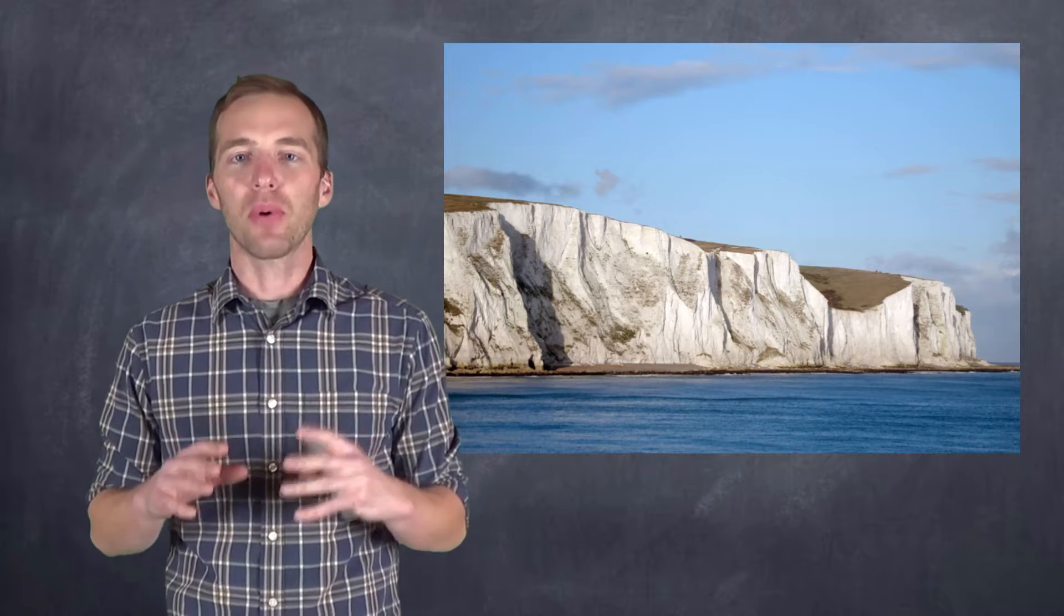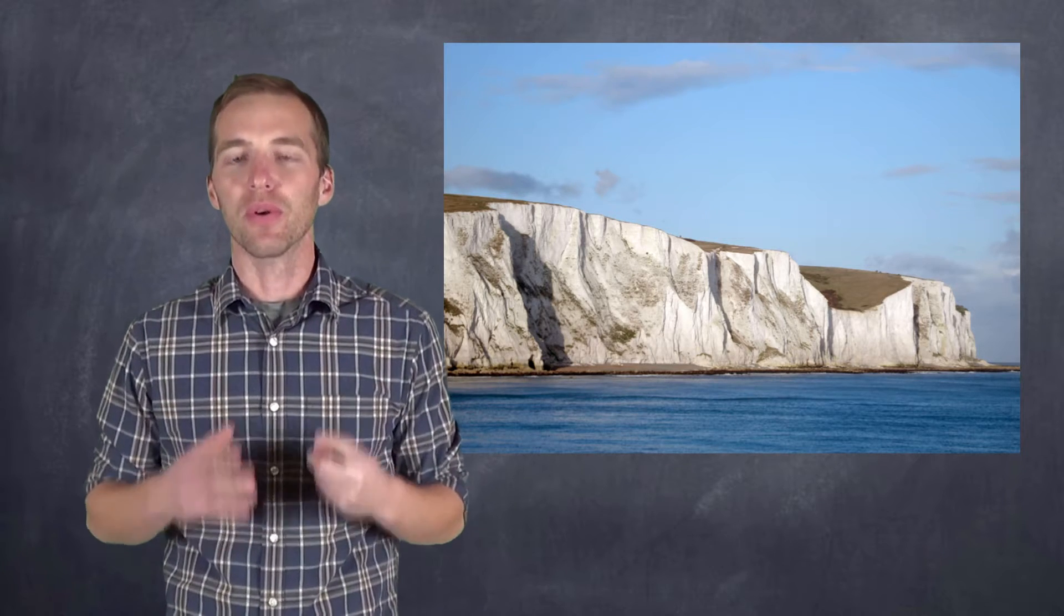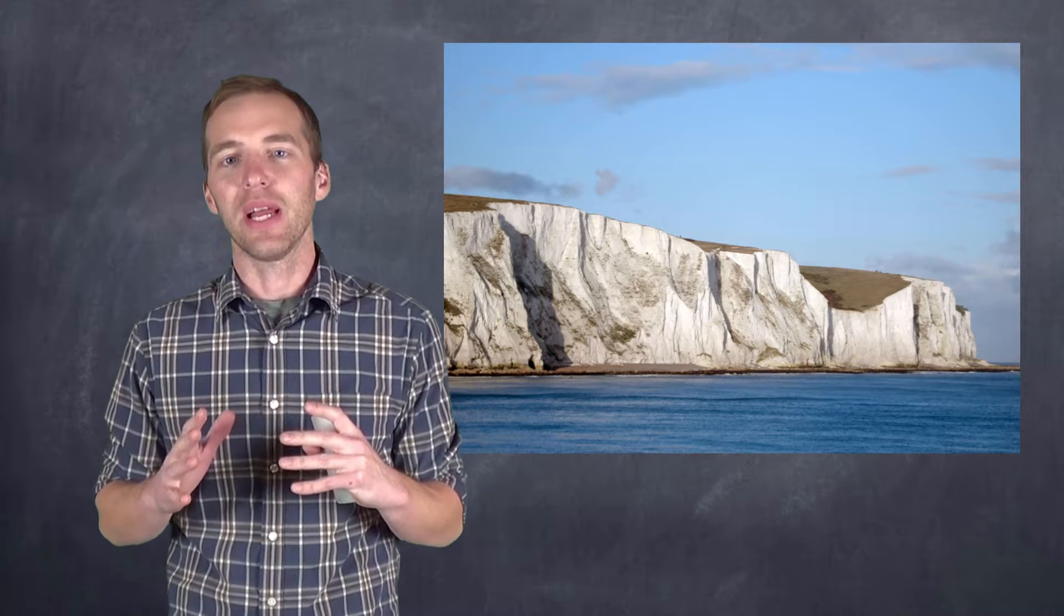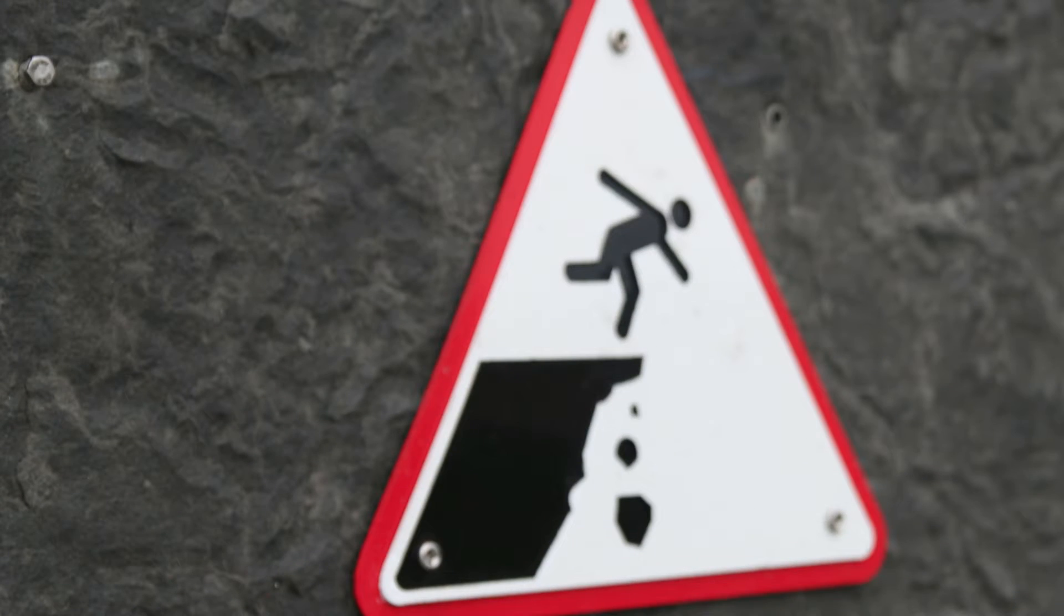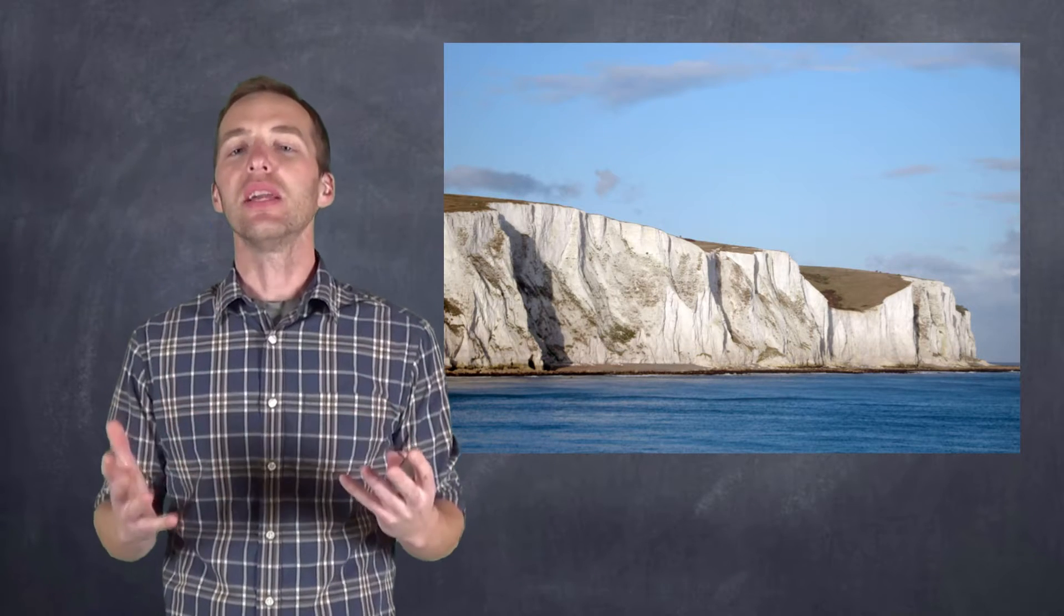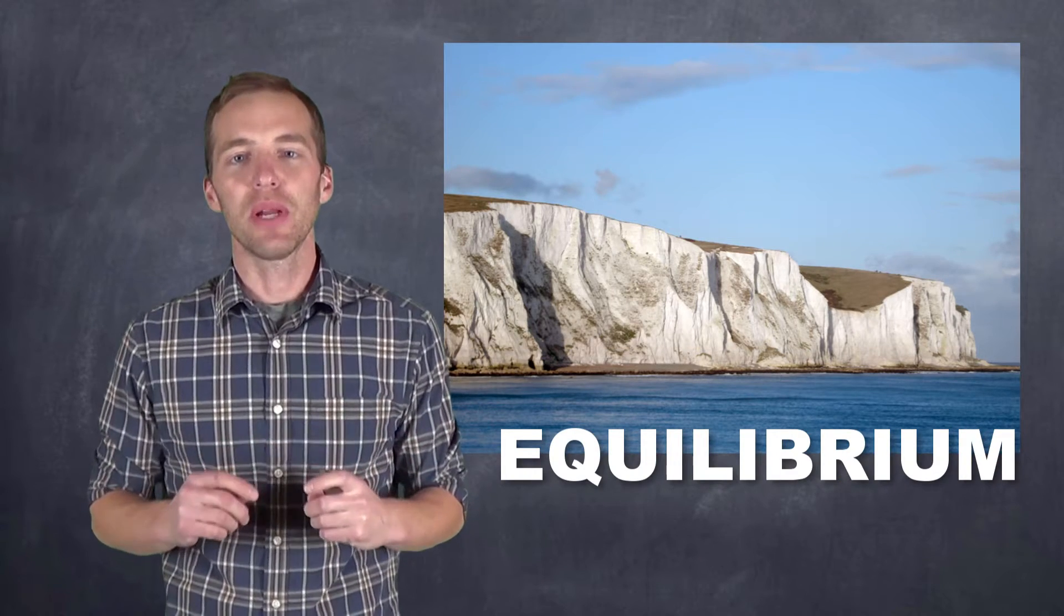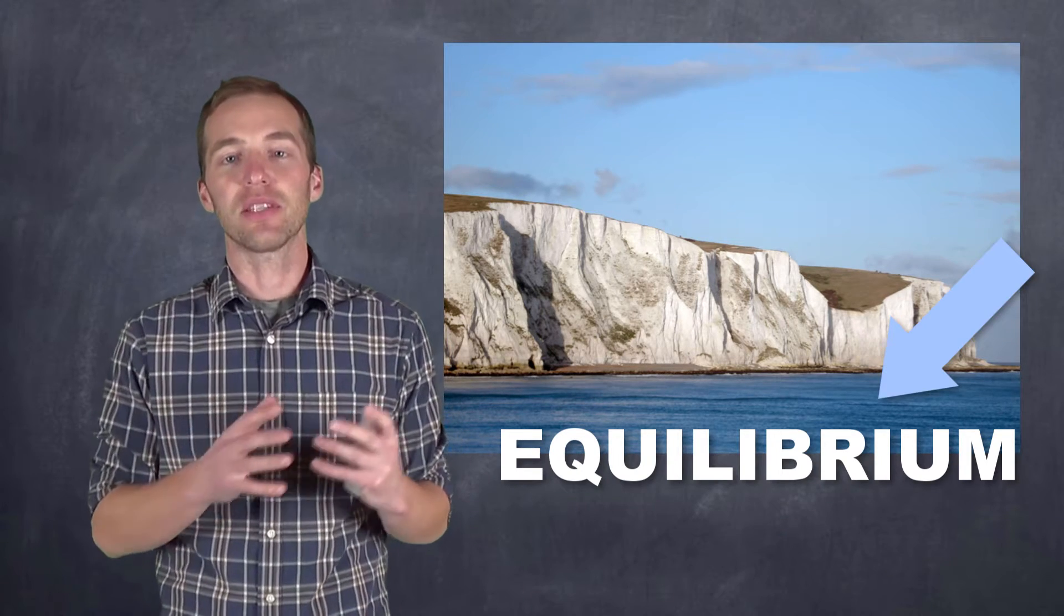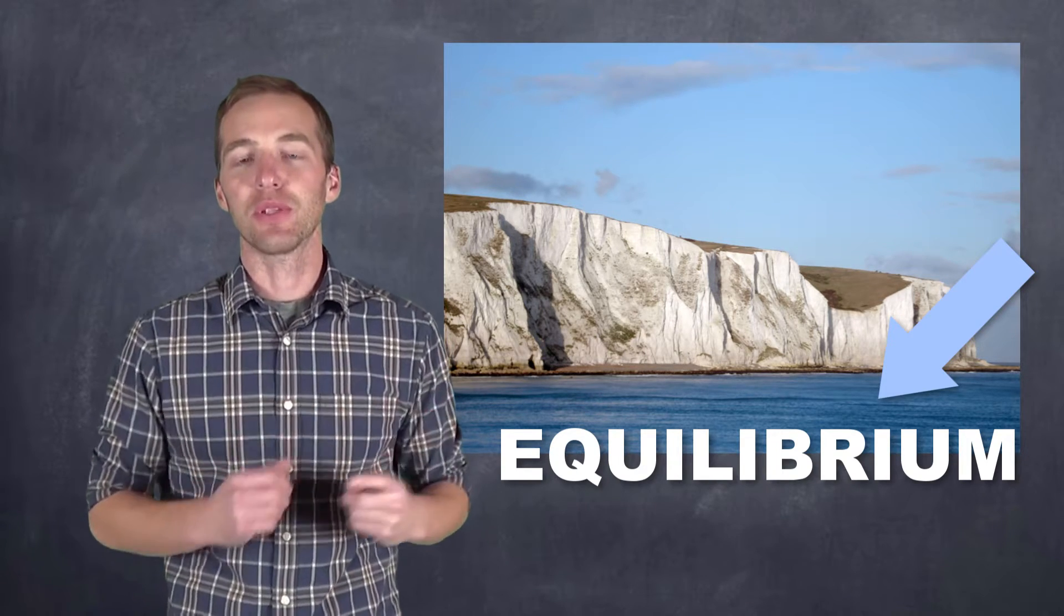The white coloration comes from deposits of limestone or calcium carbonate. And you might be wondering why this calcium carbonate hasn't sloughed off or receded into the ocean. Well, it has to do with, you guessed it, equilibrium. And there's an equilibrium that exists between the calcium carbonate in the water and the calcium carbonate that's in the limestone cliffs.